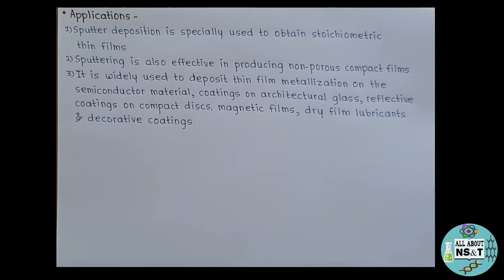And now, the last part of this technique is its application part. So, let's know about where and for what purposes can we actually implement this sputtering technique. First, sputter deposition is specially used to obtain stoichiometric thin films. Now, stoichiometric means the composition of thin films is the same as the original material. Like, the composition is same of the original material as well as the thin films.